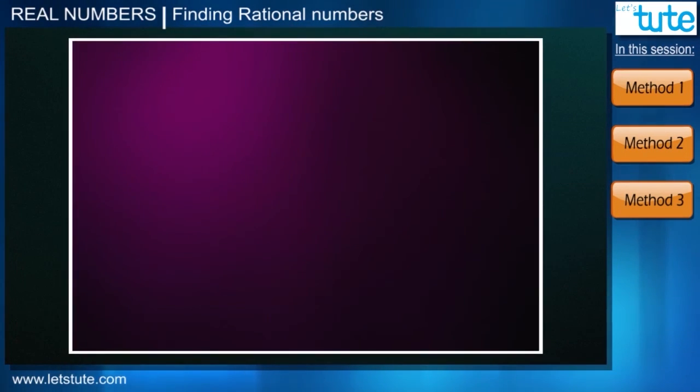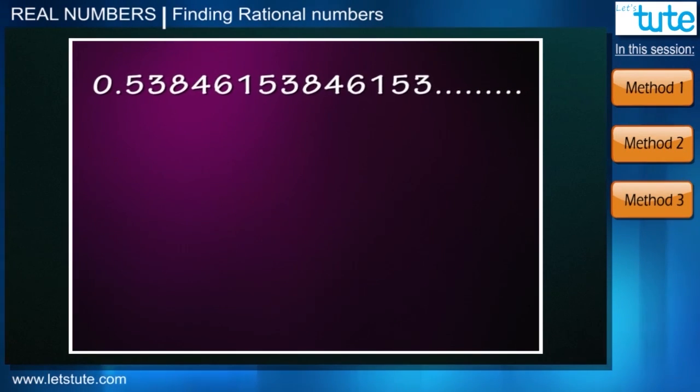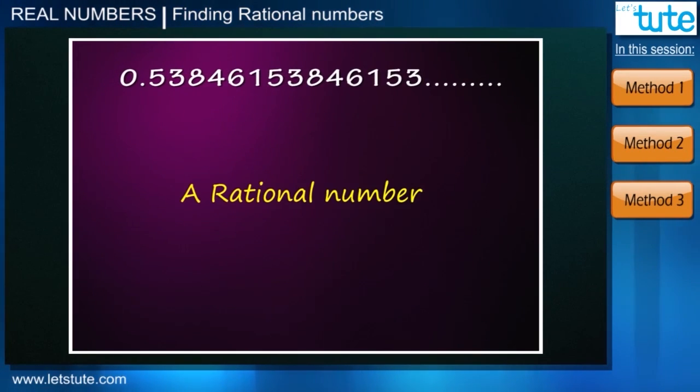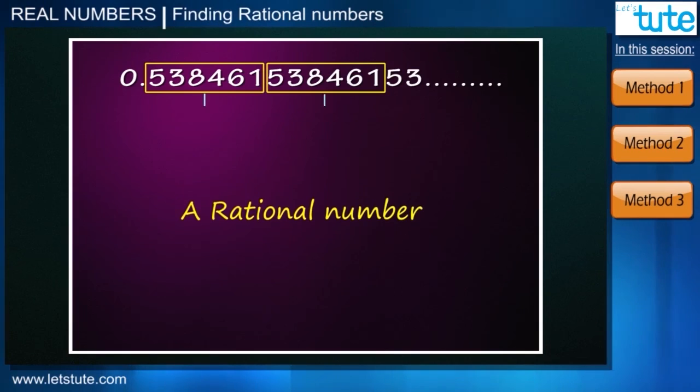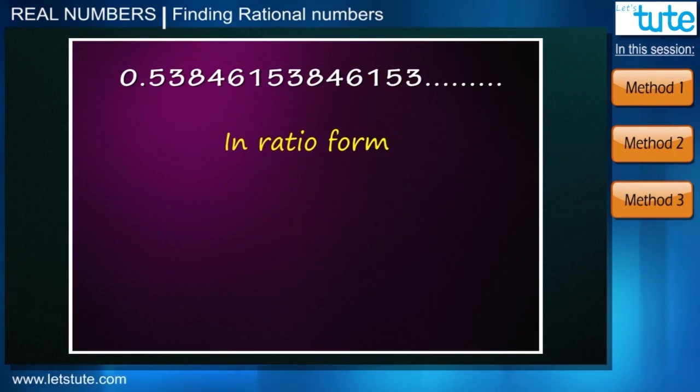Now lastly I have a question for you. Suppose you have been given a number say 0.538461 and so on. By looking at this number we can say that this is a rational number because the digits after decimal repeat in a pattern. But if I ask you to write this number in ratio form then how will you write it?